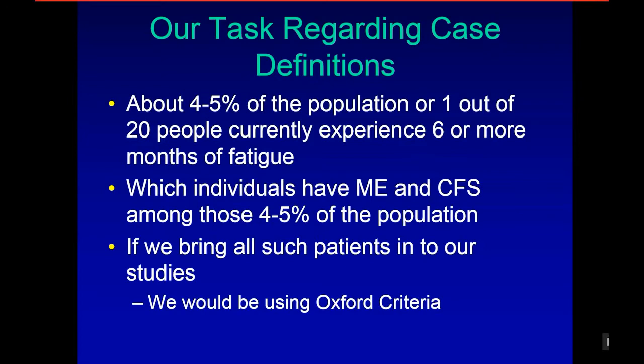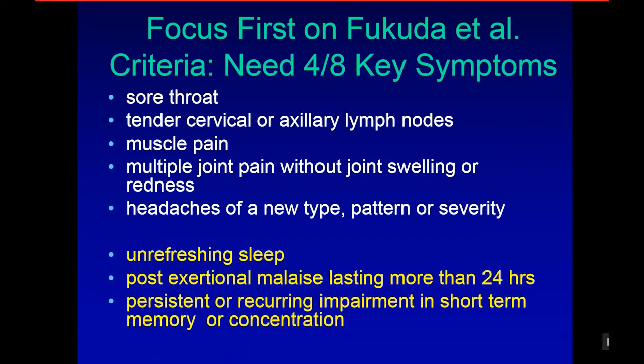First we need to focus on the Fukuda criteria. As you all know, we need to have four out of eight key symptoms. Yet the three at the bottom in yellow are the key symptoms of this illness. A person could easily have four symptoms at the top, be diagnosed with Fukuda, and not have the core symptoms of this illness.